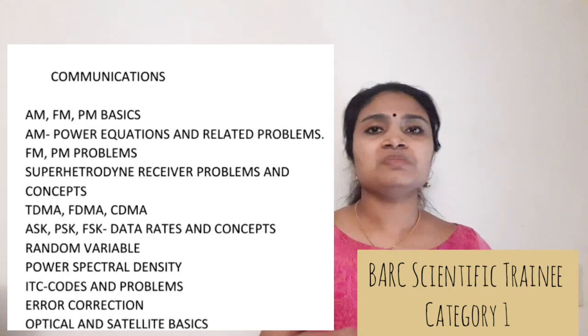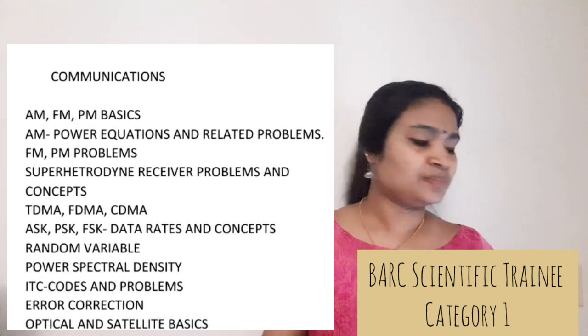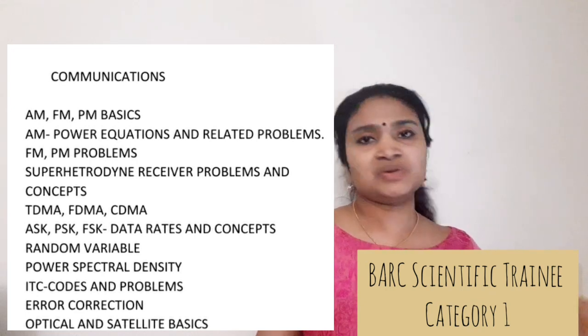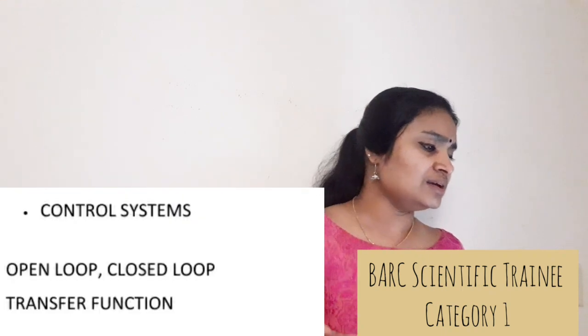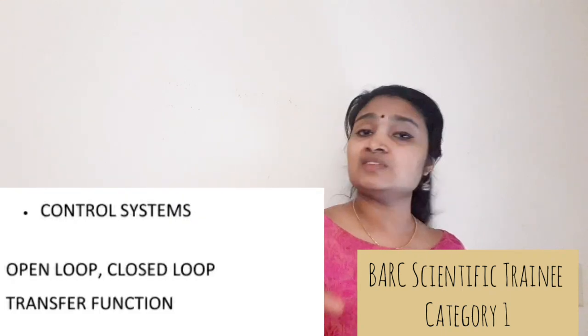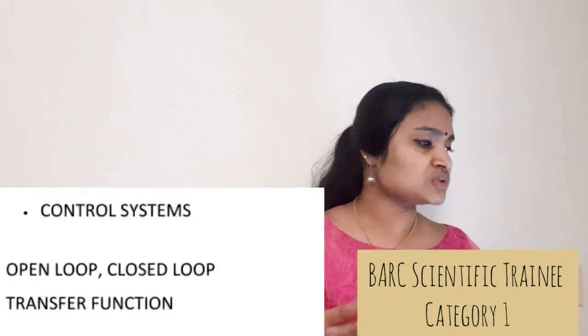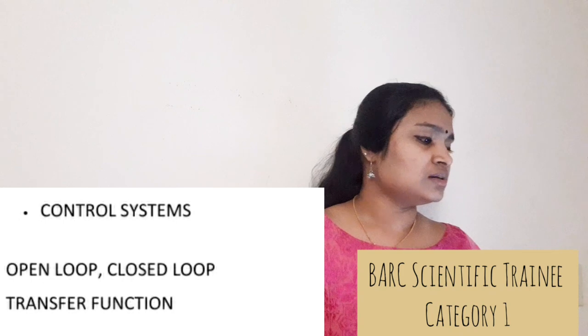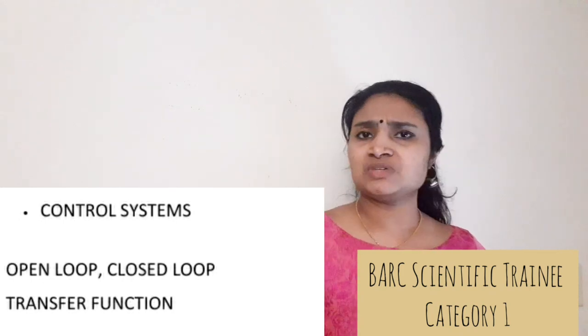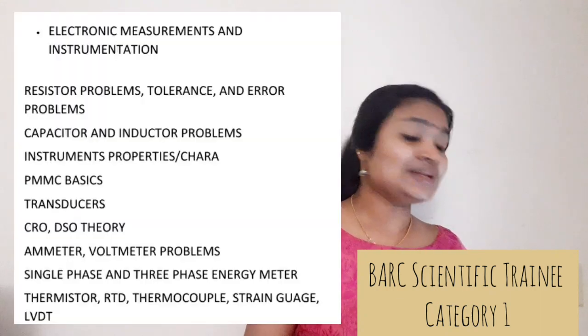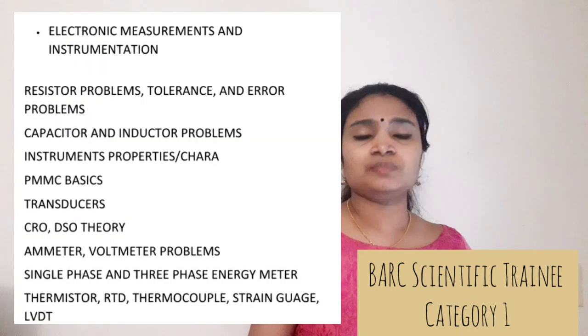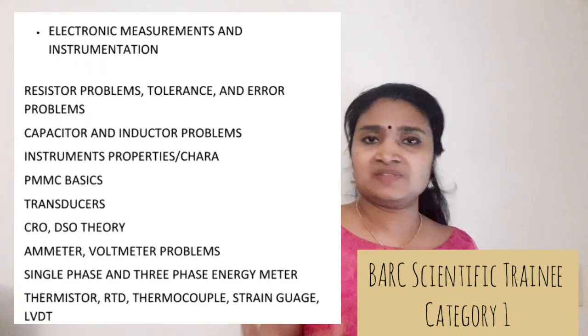Also cover the basics of information theory and coding — basic concepts of codes, error correction, and also optical and satellite communication basics. From Control Systems, only cover the basic topics: open-loop and closed-loop concepts and transfer function. That much is necessary — no need to go deeper.